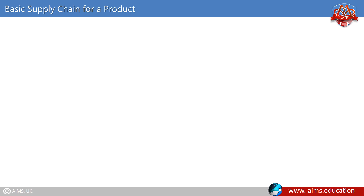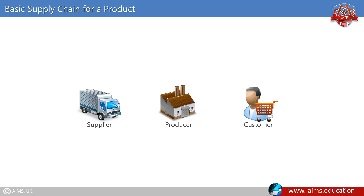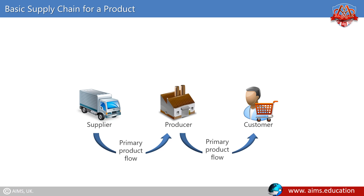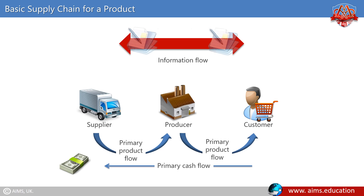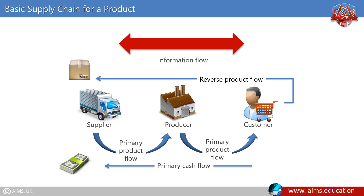The below figure illustrates a very basic supply chain with three entities: a producer with one supplier and one customer. Four basic flows that connect the supply chain entities together are: flow of physical materials and services from suppliers to the end customer, flow of cash from the customer to the raw materials supplier, flow of information back and forth along the chain, and reverse flow of product returned.